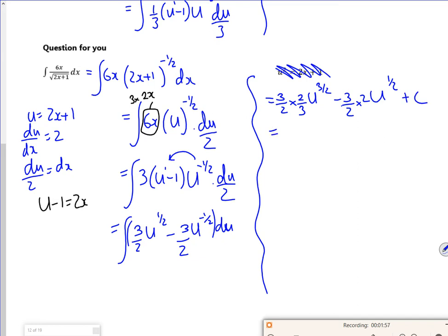So I'll tidy it up, the 3's and the 2's cancel. I'll change the u back to 2x plus 1. The 2's cancel, plus c.